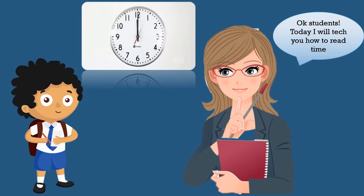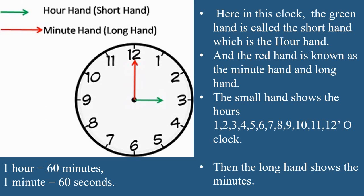Ok students, so today I will teach you how to read time on the clock. Here in this clock, students, you can see the green hand is called the short hand, which is the hour hand, and the red hand is known as the minute hand, or long hand.